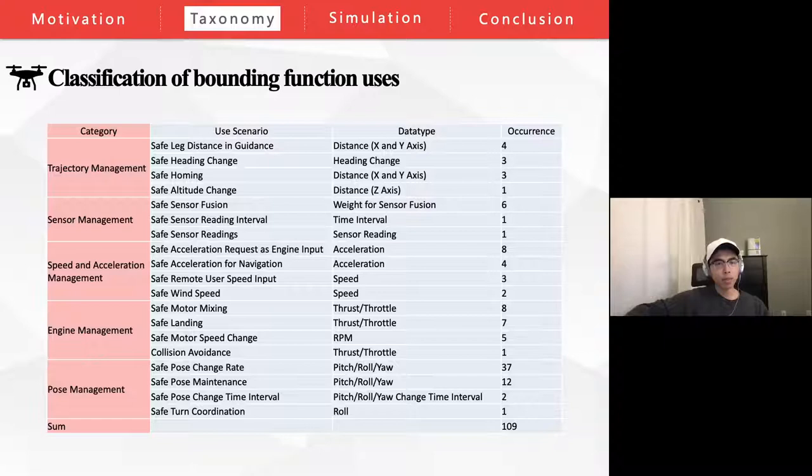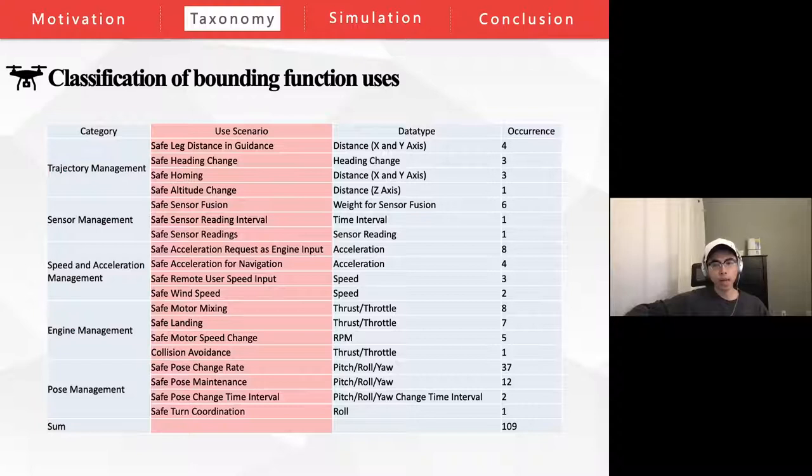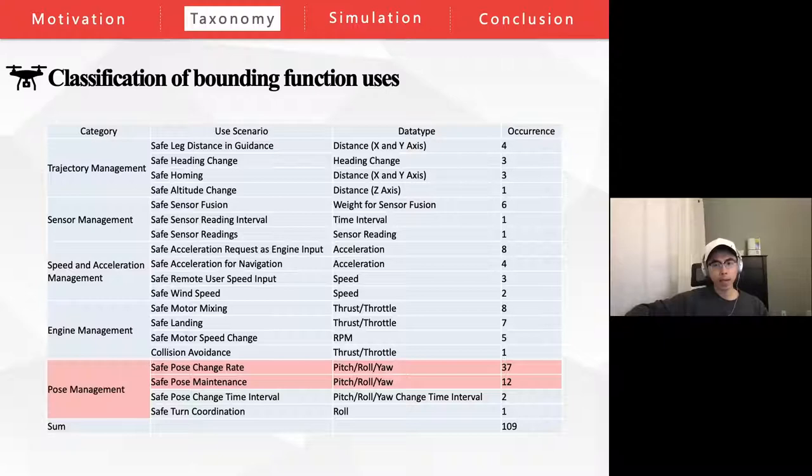Within each category, we perform an in-depth analysis on how BFs are used in paparazzi, defined as use scenarios in the second column. For example, under the pose management category, the pitch, roll, and yaw data types have more specific use scenarios such as safe pose change rate and safe pose maintenance.